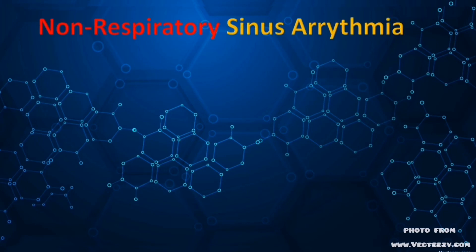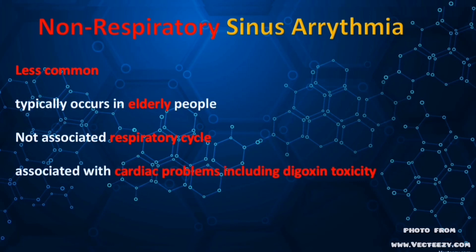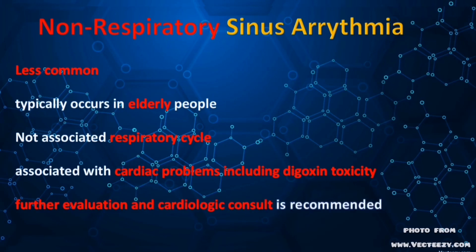Non-respiratory sinus arrhythmia is less common, typically occurs in elderly people, and as the name reveals, doesn't have anything to do with the respiratory cycle. It is more likely to be associated with cardiac problems, including digoxin toxicity. Unlike the respiratory type, further evaluation and cardiologic consult is recommended. Note that on EKG alone, respiratory and non-respiratory sinus arrhythmia are indistinguishable — patient history and physical examination are very helpful.